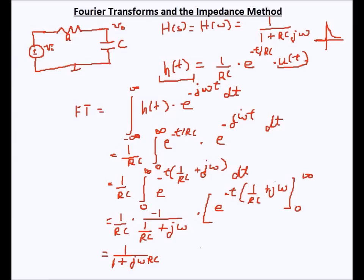Comparing this to our original transfer function, you can see that both expressions are identical. So the Fourier transform of the impulse response is actually the transfer function of our circuit.